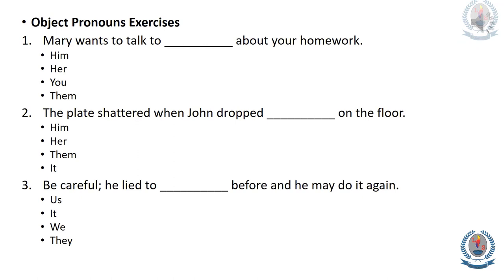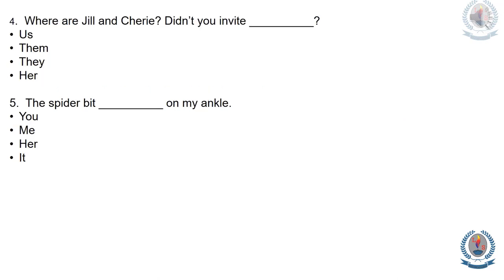Now engage in the following exercises. Number one: Mary wants to talk to blank about your homework. Number two: The plate shattered when John dropped blank on the floor. Number three: Be careful — he liked to blank before and he may do it again. Number four: Where are Jill and Cherry — didn't we invite blank? Number five: The spider bit blank on my ankle.